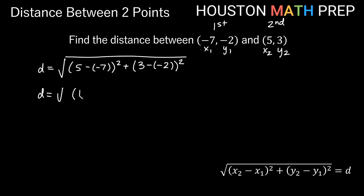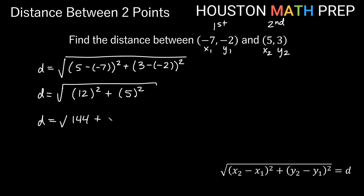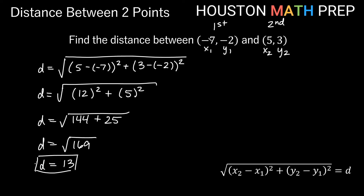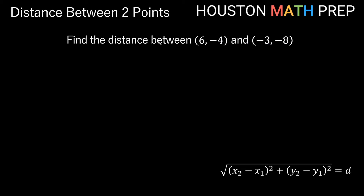Simplifying inside the parentheses: 5 minus negative 7 is like 5 plus 7, giving us 12 squared; and 3 minus negative 2 is like 3 plus 2, giving us 5 squared. So we have the square root of 12 squared plus 5 squared, which is the square root of 144 plus 25, which is the square root of 169. That's a perfect square — the square root of 169 is exactly 13 units.